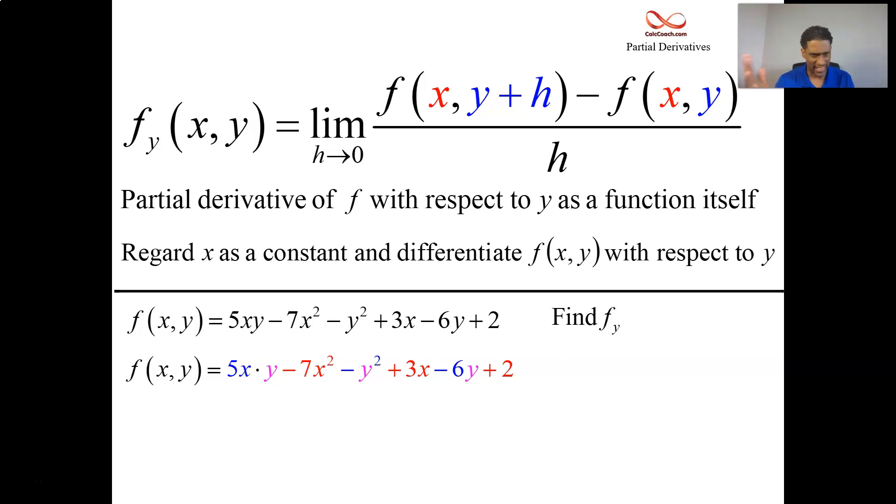Second term, there is no y's in it, so the derivative is 0. Third term, it's just a y, so it's like Calc 1. Minus 2y is the derivative, power rule. 3x's derivative is 0, 2's derivative is 0. Minus 6y's derivative is minus 6. Get rid of the colors. There you have it.